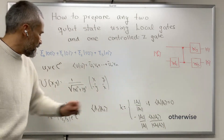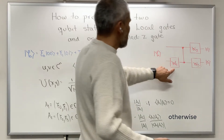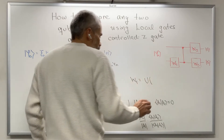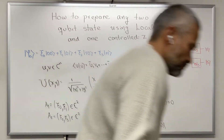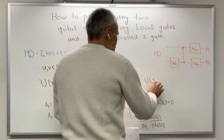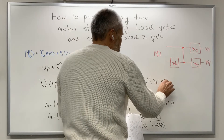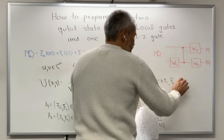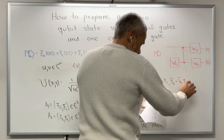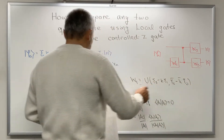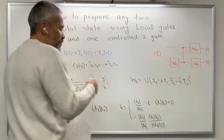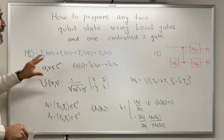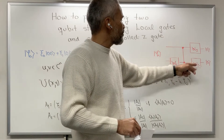Then we define k, and now we are ready to define W1. W1 is just the matrix U(c3 − k·c1, c2* − k*·c1*), which is a unitary matrix. We then take the transpose of this matrix, which is also unitary, and this is our W1.